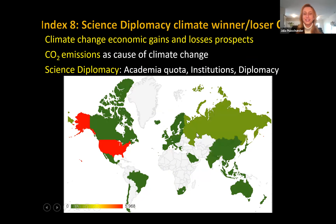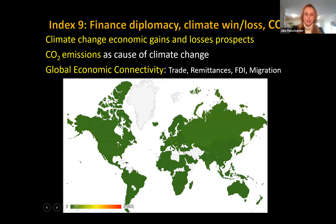I also created a science diplomacy index, factoring in what countries have a good established network of academics, institutions, and diplomacies. Here you see the importance of the U.S. and Russia — countries that may have political arguments these days, but also have high responsibility to get their science diplomacy networks together to help alleviate climate change. In the very last index, I also factor in global economic connectivity of trade, remittances, foreign direct investments, and migration. Small European countries like Luxembourg, Switzerland, and Hungary have a really good starting ground to help move funds quickly around the globe to mitigate and adapt to climate change.